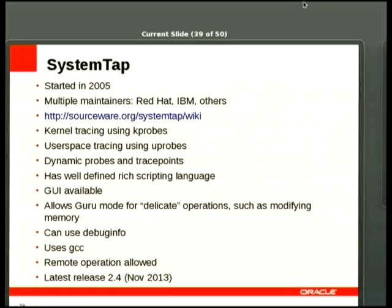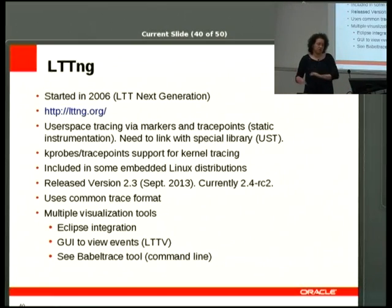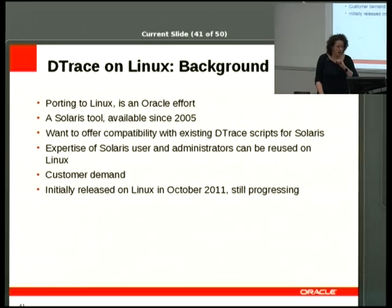SystemTap started in 2005 when Solaris had DTrace — and this is how kprobes got added to Linux. There's always been controversy around SystemTap due to its use of gcc, generating and inserting kernel modules, and requiring kernel debugging info. But the community has become more receptive to tracing infrastructure since then — perf itself now supports use of debugging information. LTTng is also an external tool that's been around a while, used in some embedded distros, with an active community.